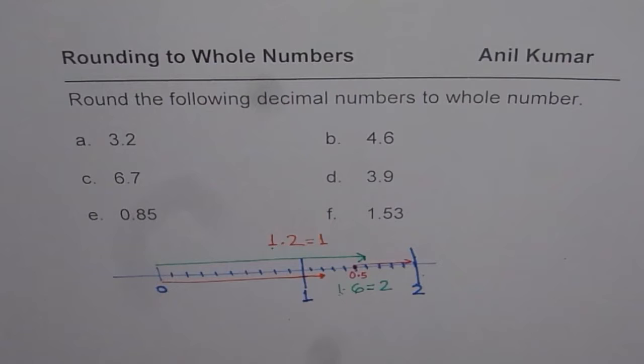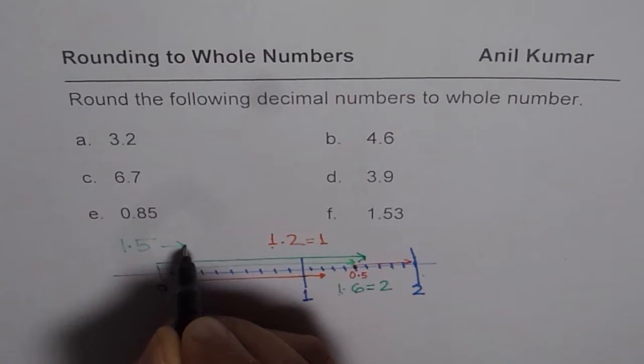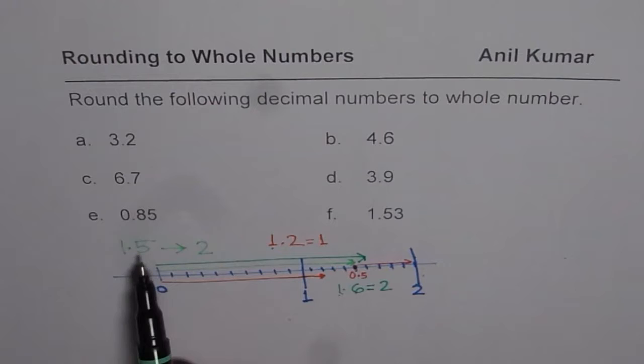That is to say, that if I have another line, which is, let us say, 1.5, up to here, then this will also be rounded to, let us say this is 1.5, then this will be rounded to higher number, which is 2. You get the idea.